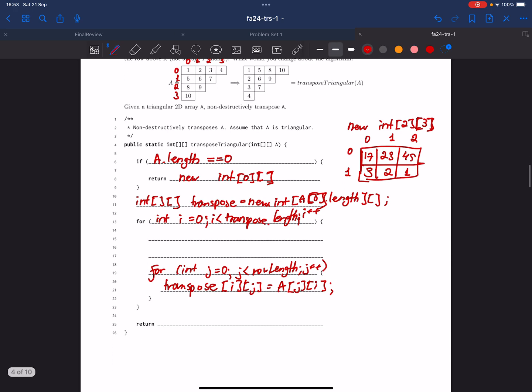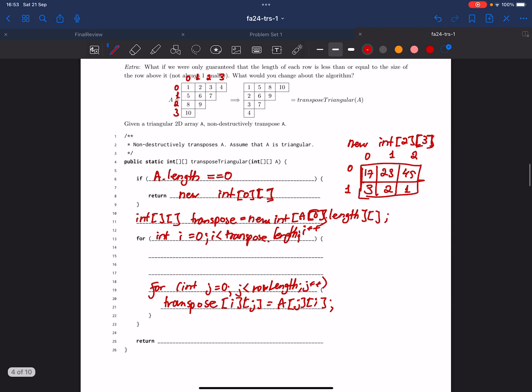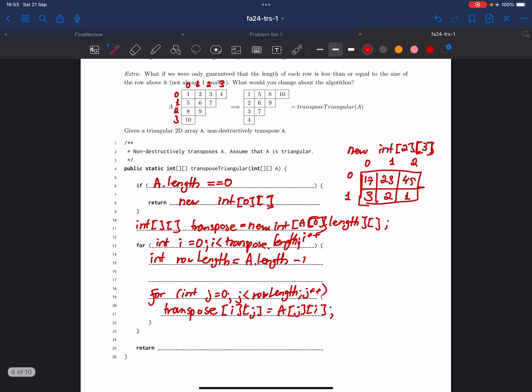Now let's identify how many rows we have in our transpose array. The best way to do it will be to create a new variable called row length, which will be equal to A.length minus i. Since our row length always goes down, here we have four values, here we have three, two, one...